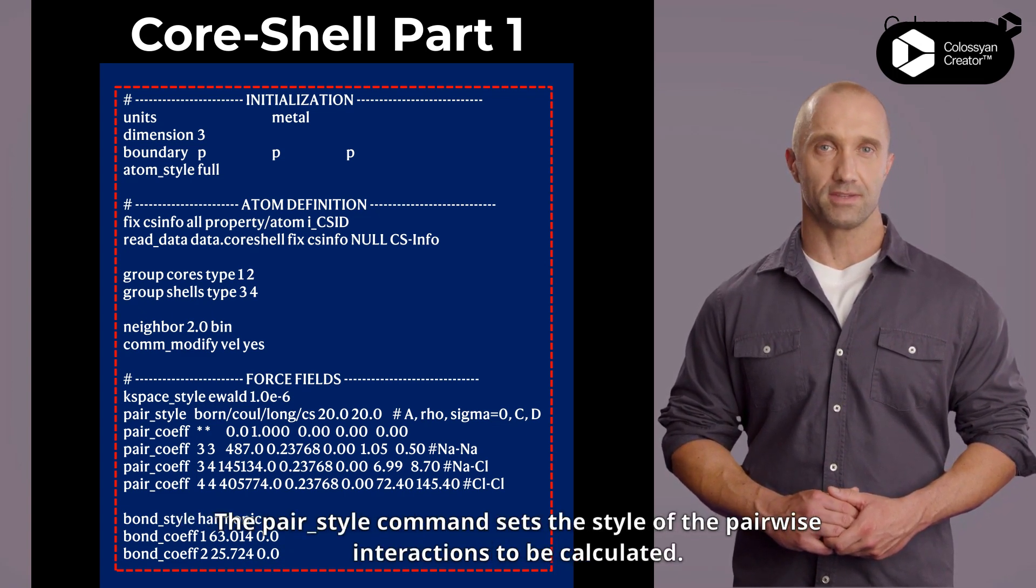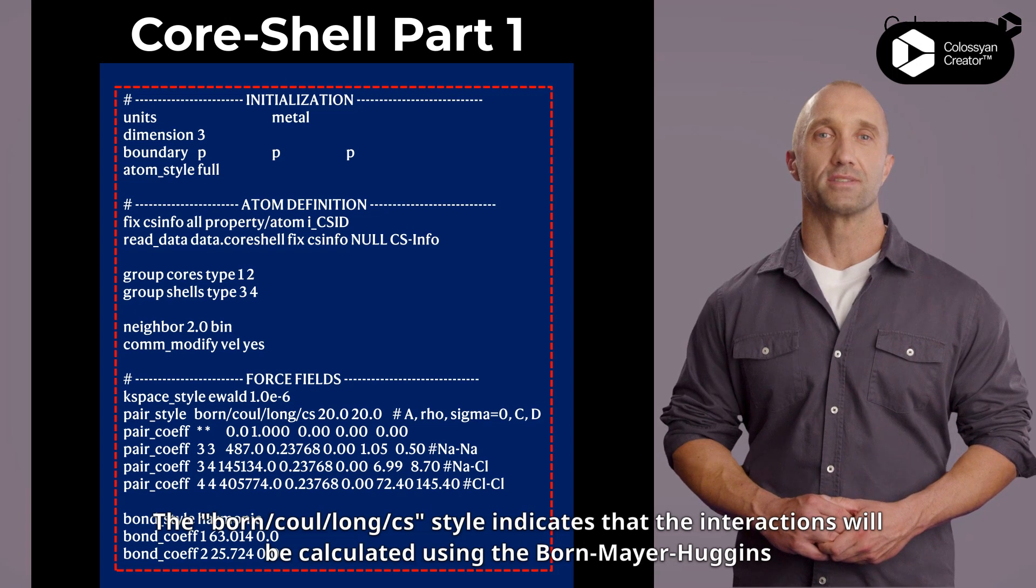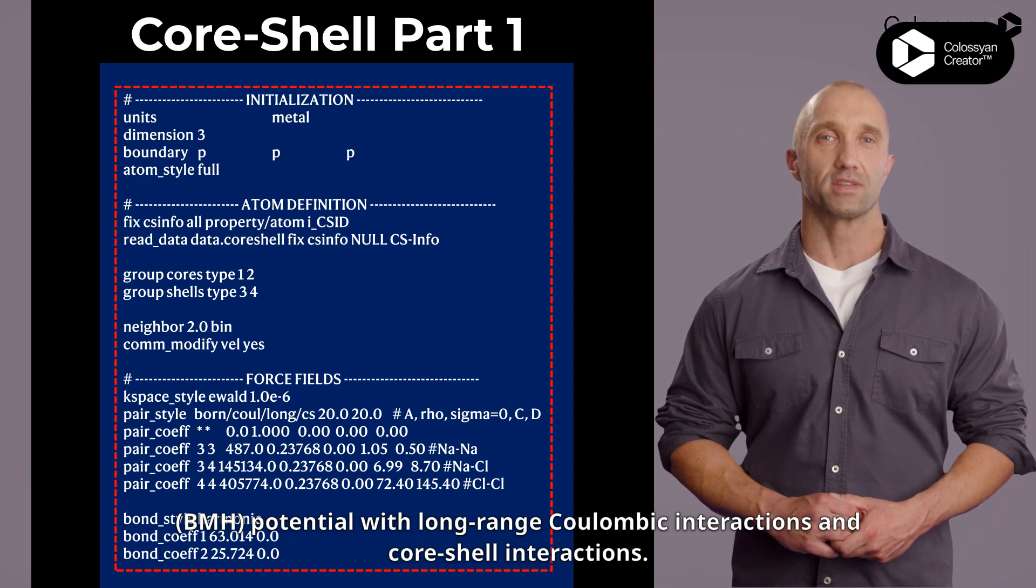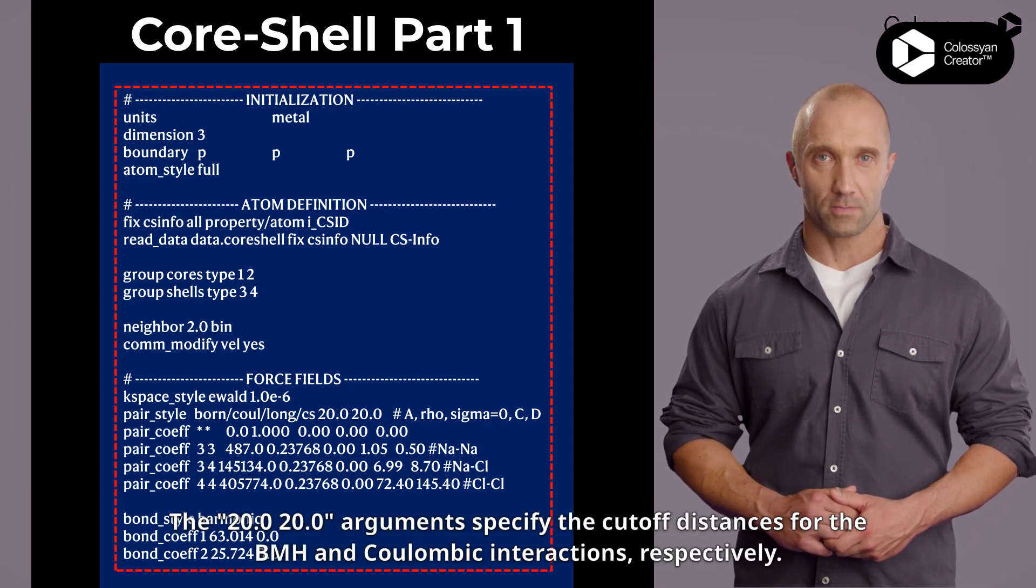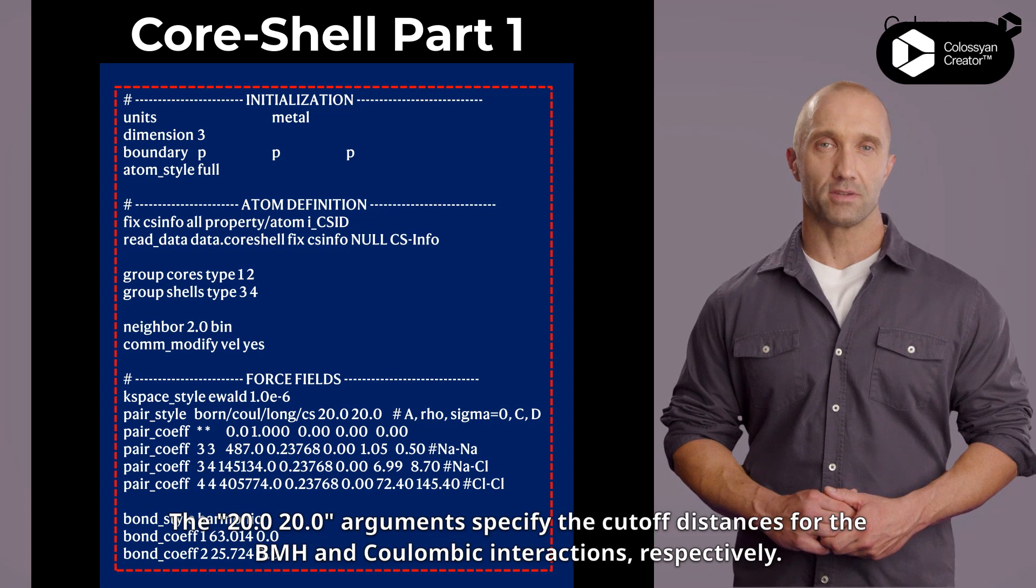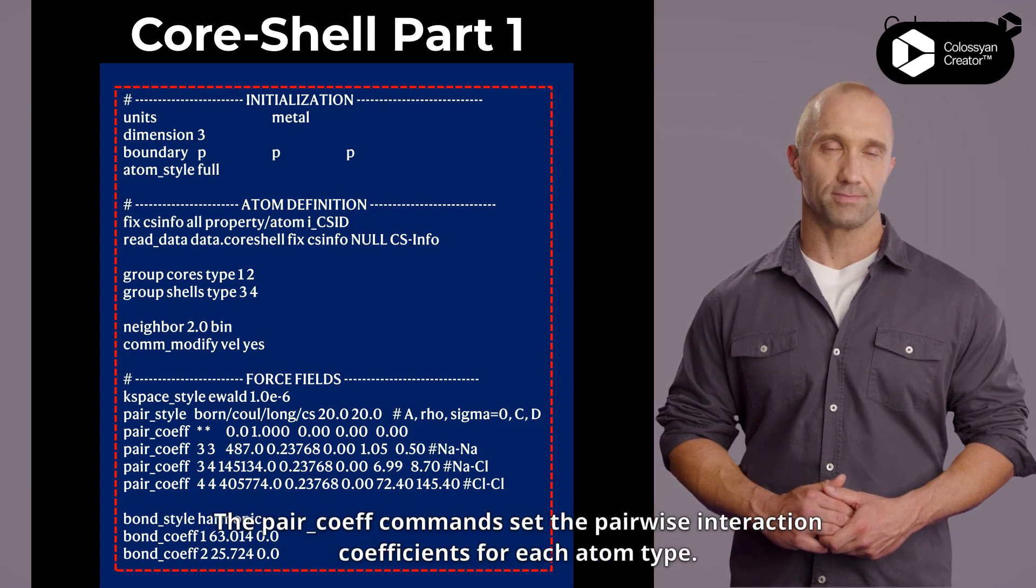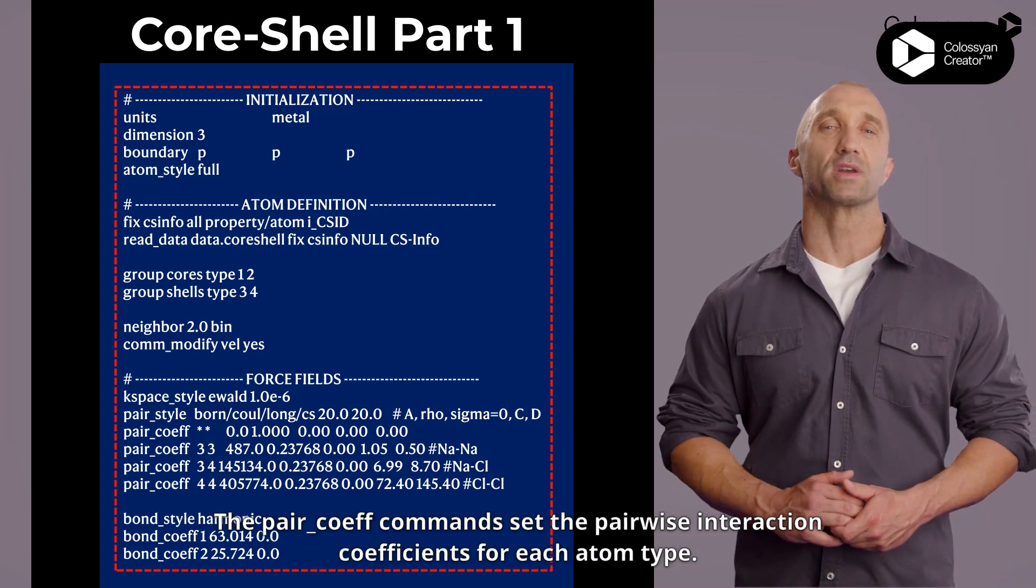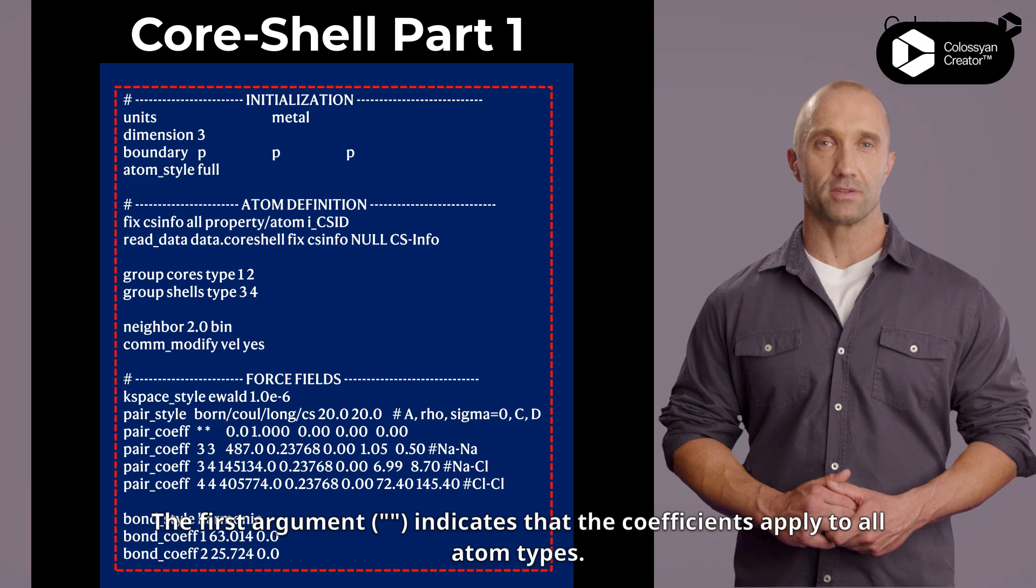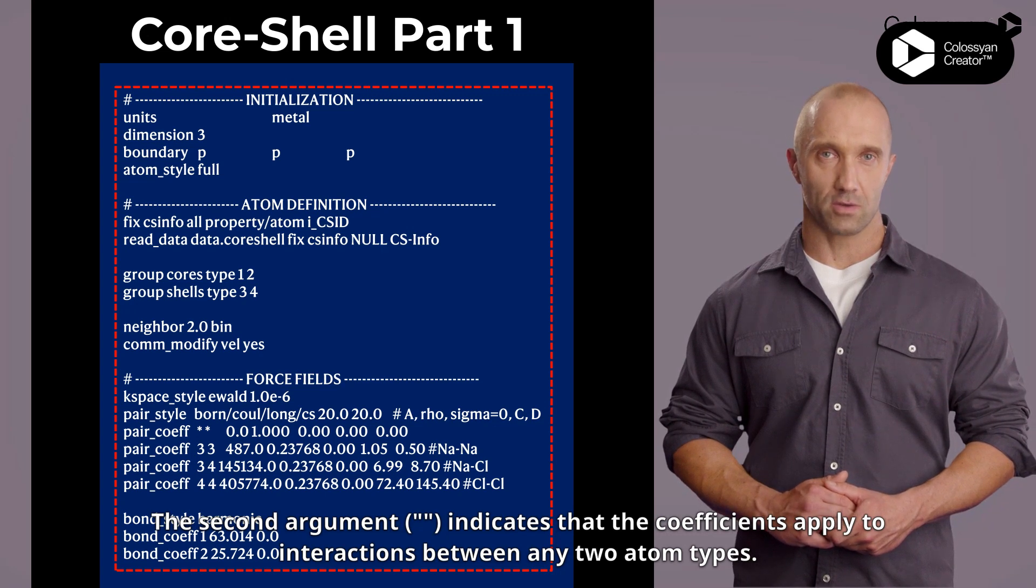The pair_style command sets the style of the pairwise interactions to be calculated. The born/coul/long/cs style indicates that the interactions will be calculated using the Born-Mayer-Huggins (BMH) potential with long-range Coulombic interactions and core-shell interactions. The 20.0 20.0 arguments specify the cutoff distances for the BMH and Coulombic interactions, respectively. The A, rho, sigma, C, and D arguments are parameters for the BMH potential. The pair_coef commands set the pairwise interaction coefficients for each atom type. The first argument indicates that the coefficients apply to all atom types. The second argument indicates that the coefficients apply to interactions between any two atom types.